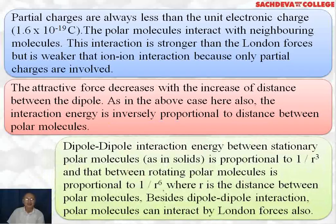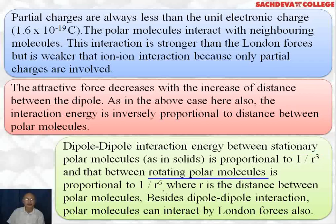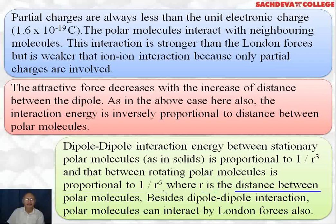For stationary polar molecules — meaning those that are not moving, as in solids — the dipole-dipole interaction energy is proportional to 1/R³. But for rotating polar molecules, such as those in the gaseous state that can move freely, the interaction energy is proportional to 1/R⁶, where R is the distance between the polar molecules.